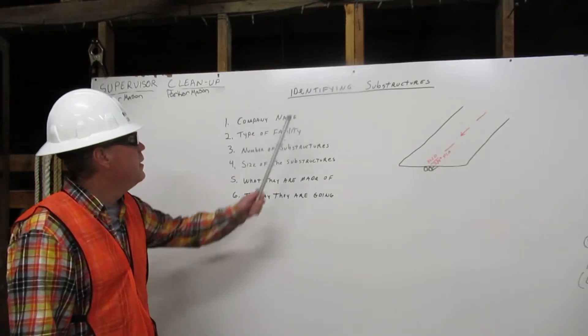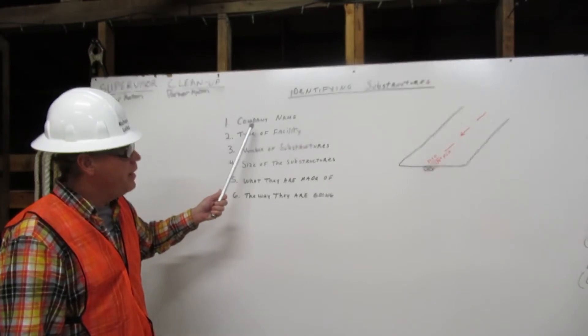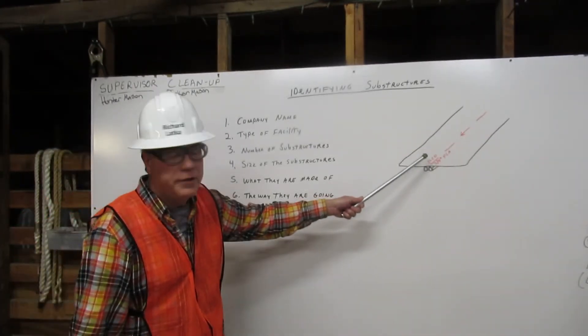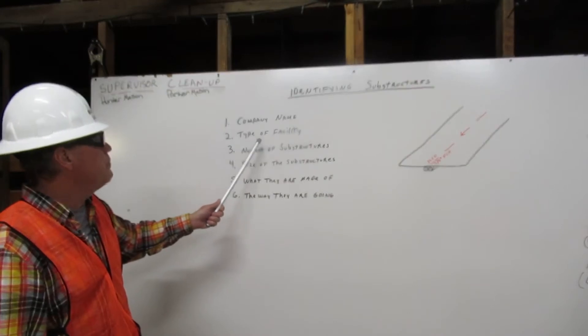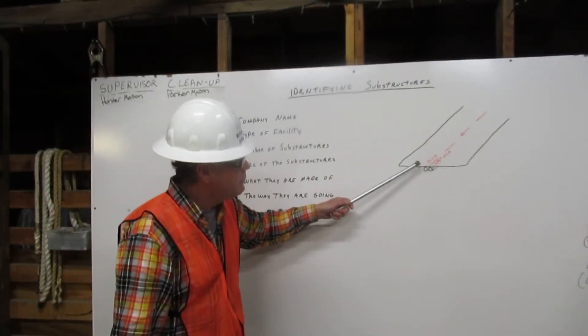Let me show you an example. Identifying substructures. First, the company name. Elco is the company name. Two, the type of facility. We see it here in red. Red indicates an electric facility.